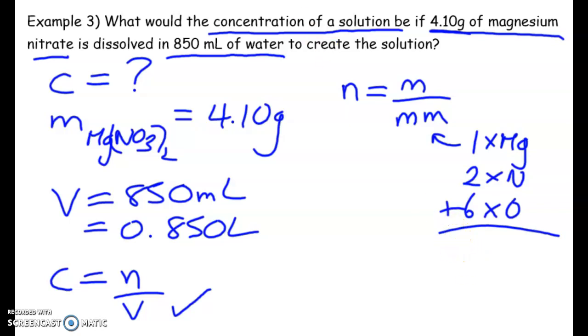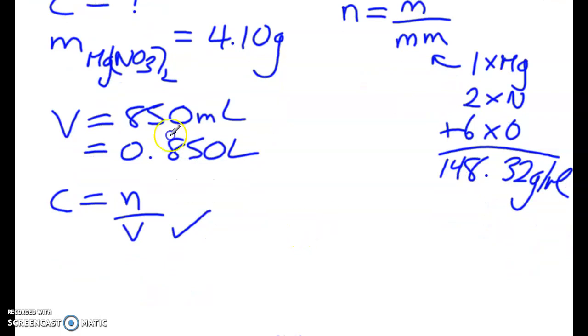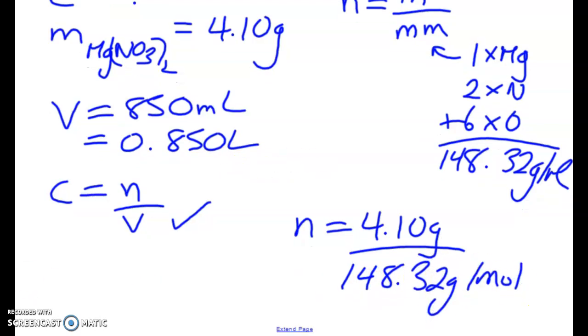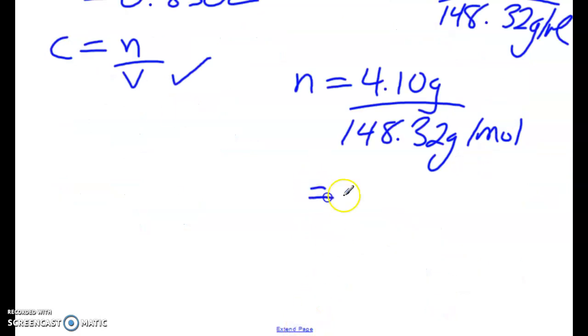So we get a molar mass here of 148.32 grams per mole. So our mole value ends up being 4.10 grams over 148.32 grams per mole. So 4.10 divided by that. So we get here 0.02764 moles.